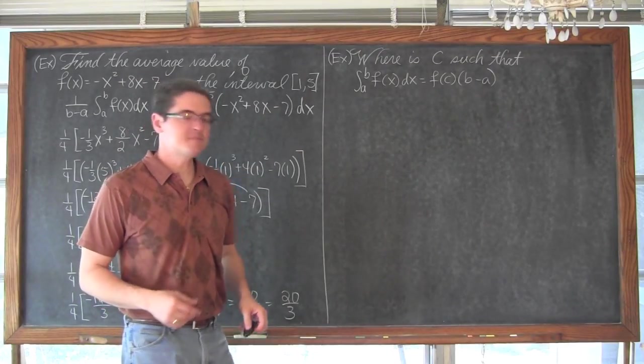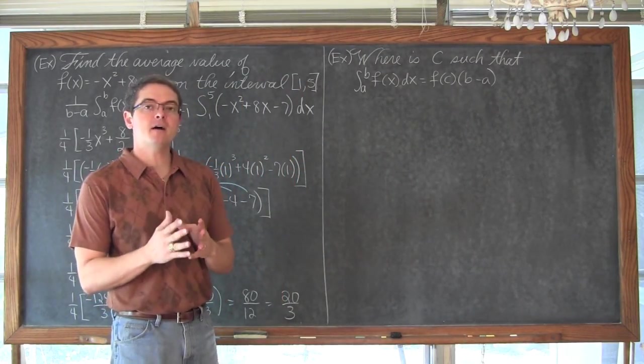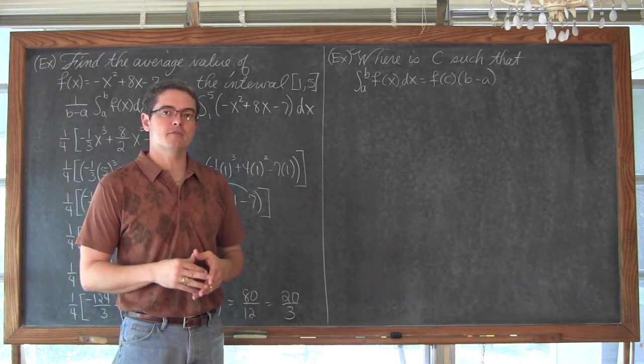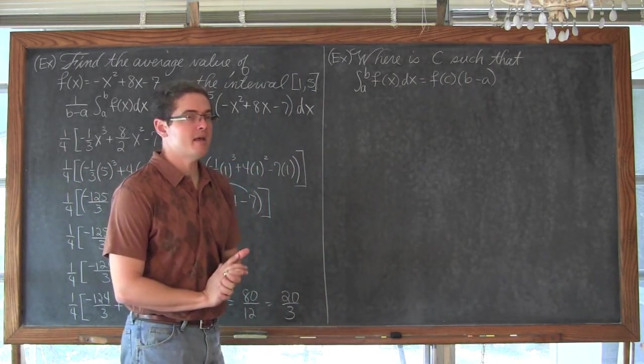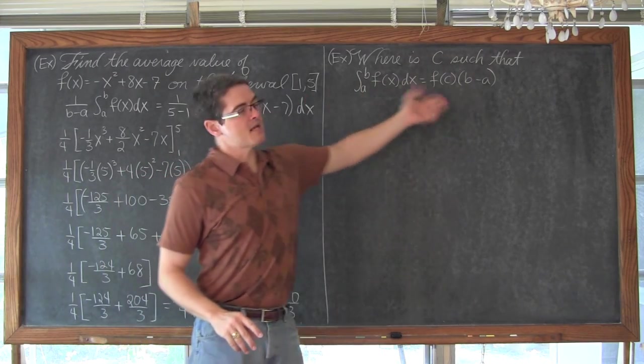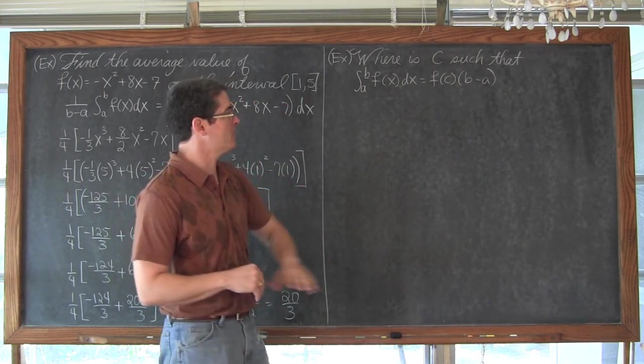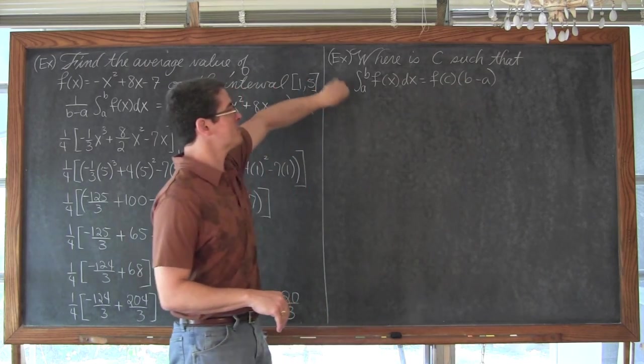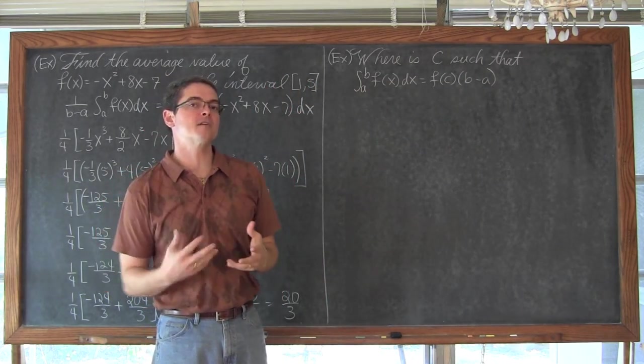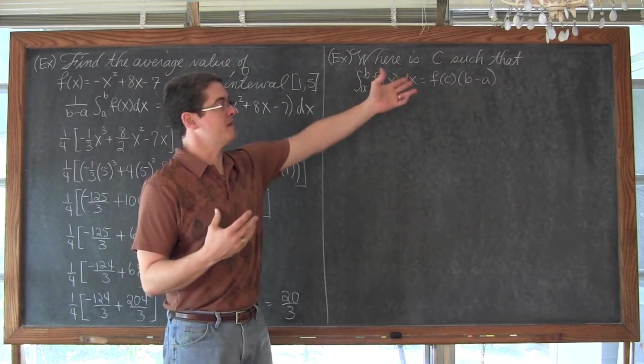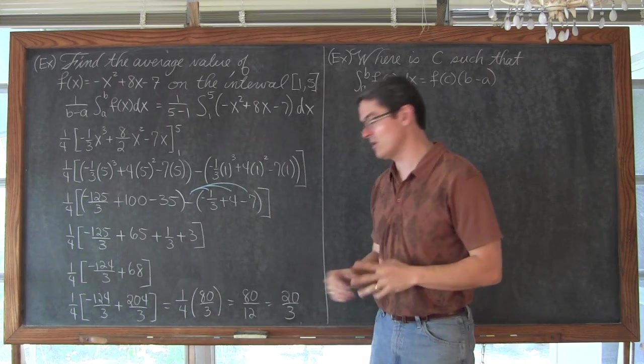Now this question comes in. Now that we know what the average value is, let's find that value of c on that closed interval, where f of c times b minus a equals the definite integral. I am writing this exactly how it appears in our book, which will take me an extra step. Because remember, if we take this equation and divide both sides by b minus a, we are going to have f of c, the height of that rectangle, equal to the average value.